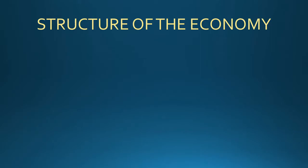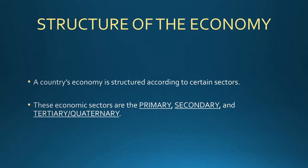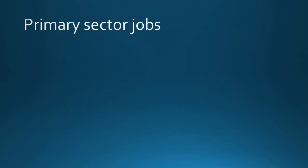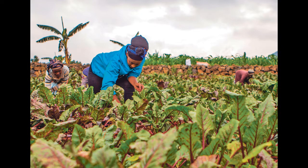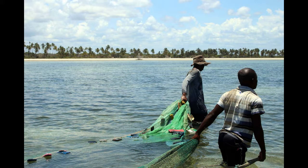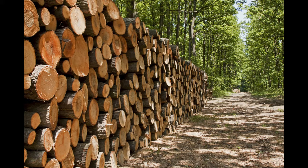Finally, the last indicator of economic development is the structure of the economy. Each country's economy is broken up into three sectors: the primary sector, the secondary sector, and the tertiary sector. There is a fourth sector called the quaternary sector, but for the purposes of this video we are going to combine it with the tertiary sector. Each sector is characterized by certain kinds of jobs based on the product or service provided. Primary sector jobs involve extracting raw materials from the earth through practices like farming, fishing, mining, and forestry. These are generally considered low-skilled jobs that do not require much training or education, and are therefore some of the lowest paying jobs available.